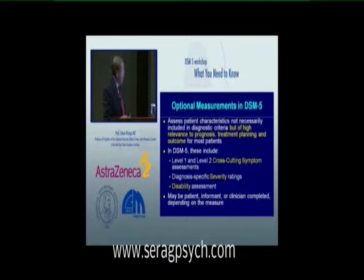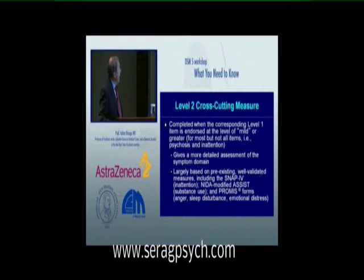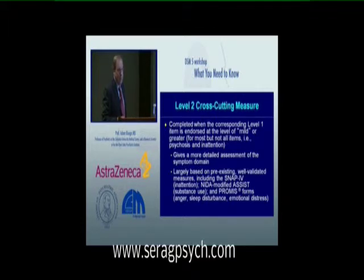The cross-cutting Level 1 includes 13 different symptom domains for adults and 12 symptom domains for children — 11 plus for parents of children age six and greater. These are one to three questions per symptom domain, and they screen for important symptoms, not for specific diagnoses, which is why we call them cross-cutting. If somebody scores mild or greater on Level 1, they would automatically be directed to the Level 2 on the iPad application for a more detailed assessment of that symptom domain.